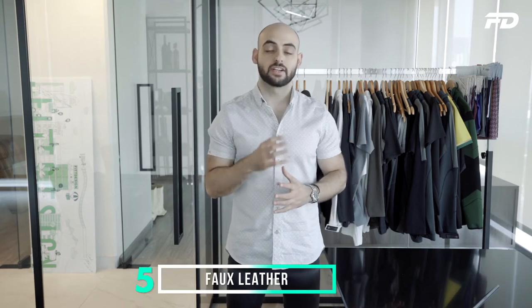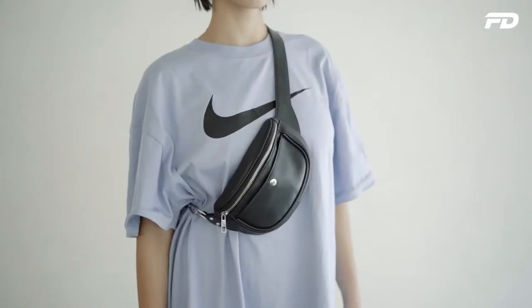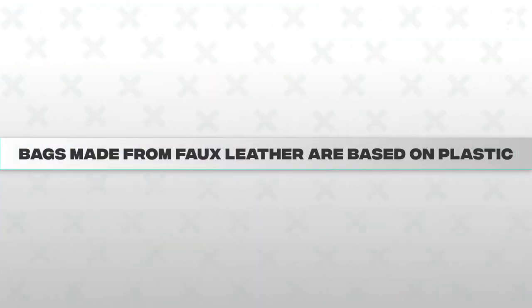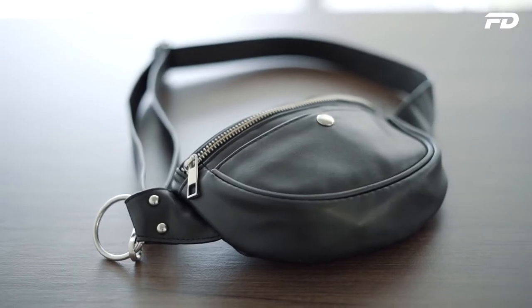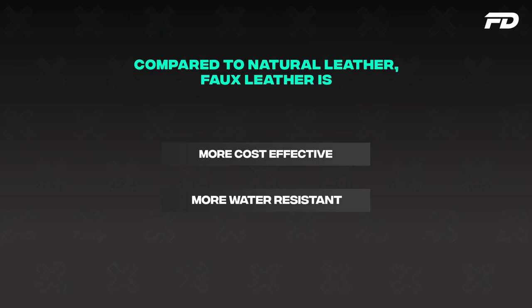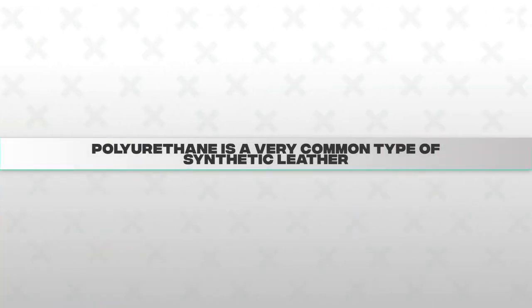Faux leather is another very common leather alternative in the bag design world. Unlike standard leather sourced from animals, faux leather bags are typically based on plastic — plastic paste compounds made to look and feel like leather. One main benefit is it's a lot more cost effective than traditional natural leathers and is typically more water resistant. Polyurethane is a very common type of synthetic leather, but PVC or polyurethane synthetic leathers are a lot less durable and don't hold up over time. You typically see faux leather on more lower-end to medium-priced garments — not on luxury goods, so avoid it if you're targeting a luxury market.